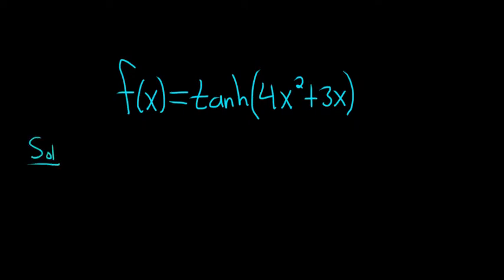The derivative of the hyperbolic tangent is the hyperbolic secant squared. So here, when we take the derivative, it'll be the hyperbolic secant squared.